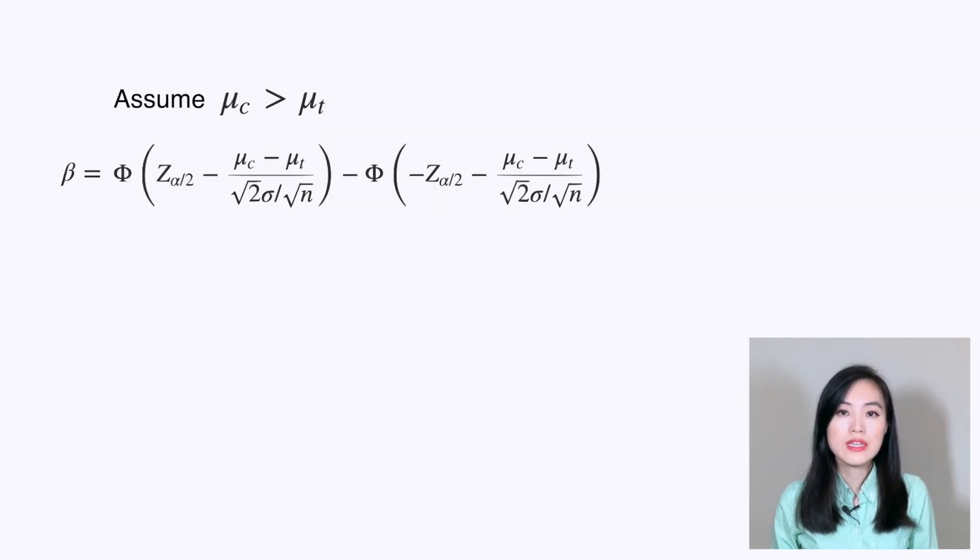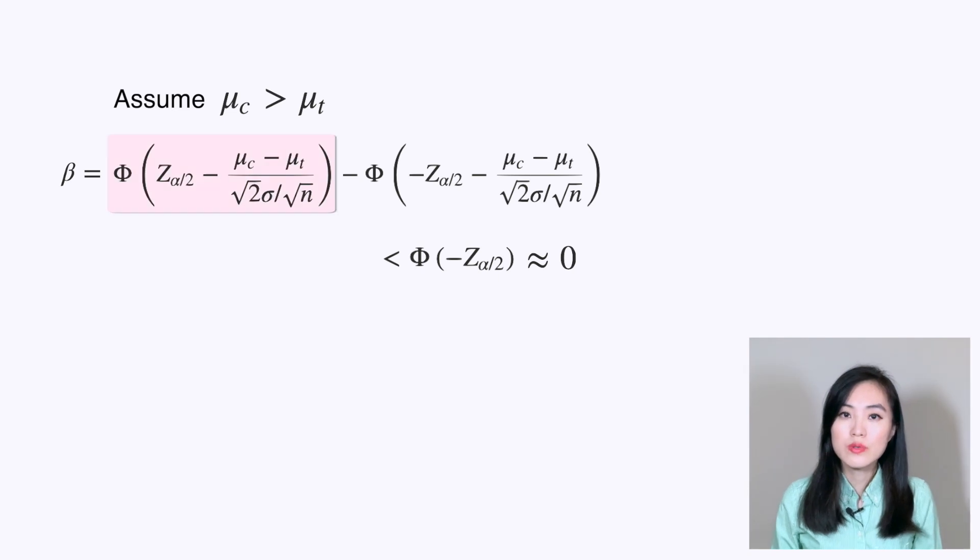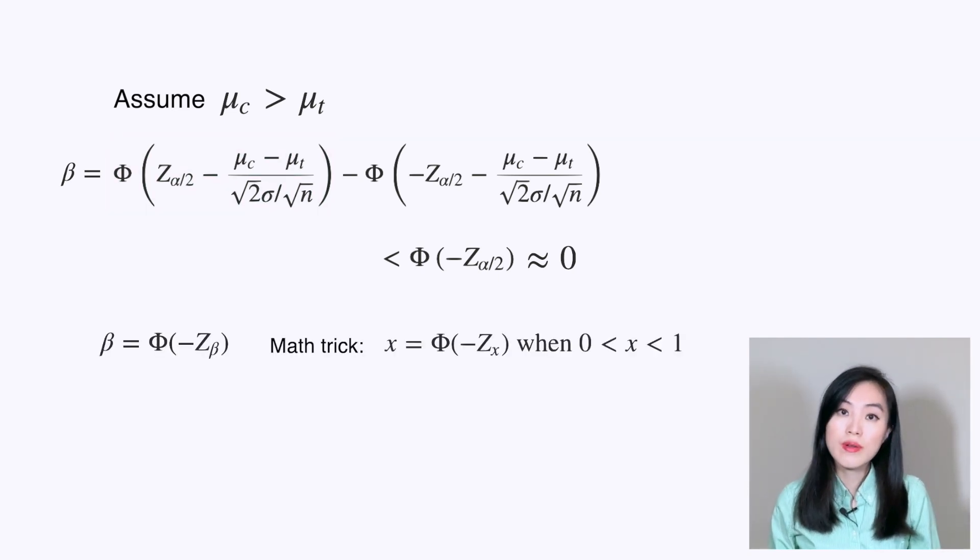Assume μ_c is larger than μ_t. The right side of the minus sign in the above formula is always less than -z_{α/2} because this part is a positive value. If -z_{α/2} is very small, we can approximate it as zero. Therefore, β is approximately equal to the left side of the minus sign, which we can represent using Φ.